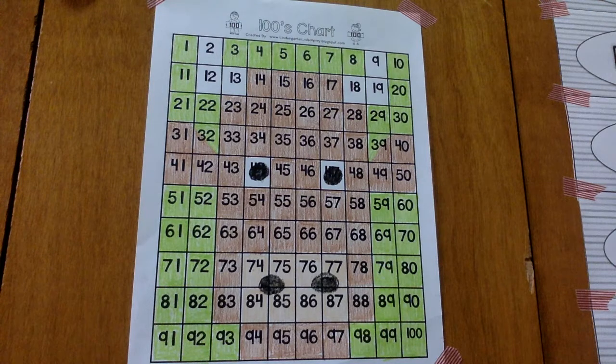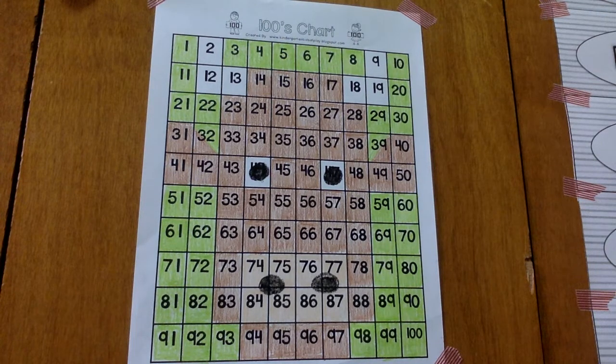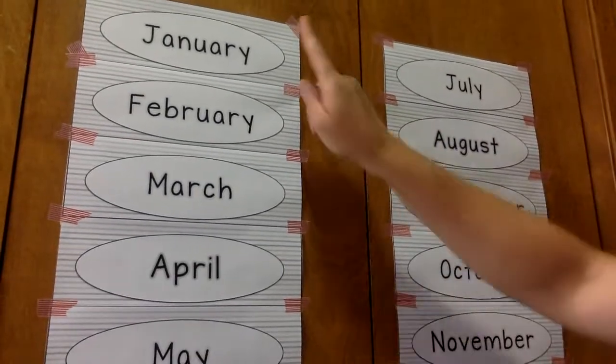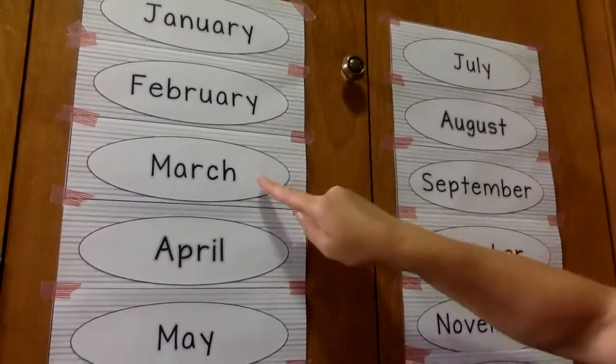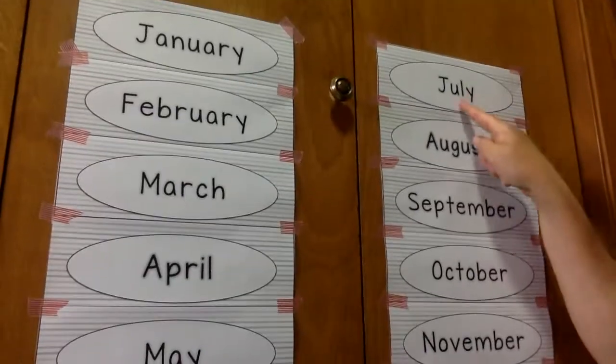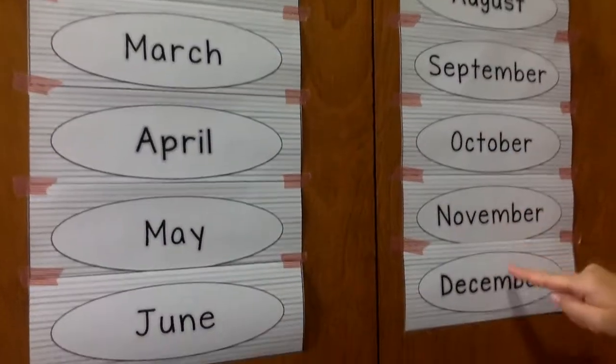Okay, that's our mystery picture. A farm animal. Let's finish with the months of the year. And then you can get started on other jobs this morning. Here we go. January, February, March, April, May, June, July, August, September, October, November, December.